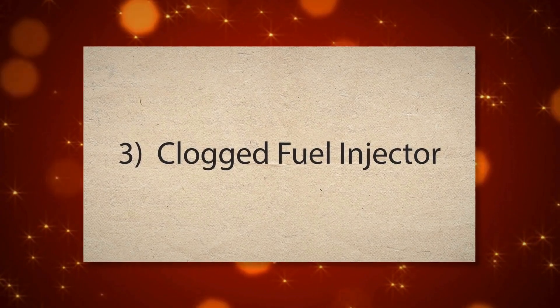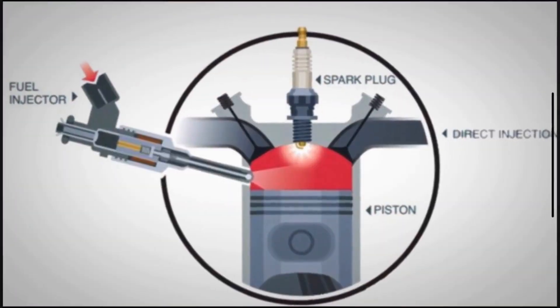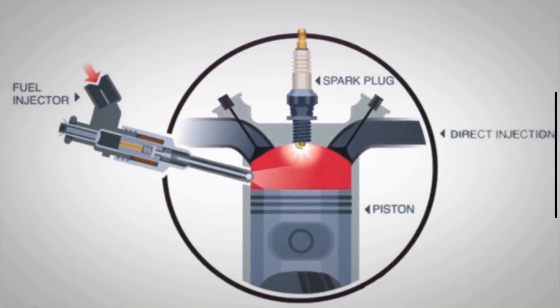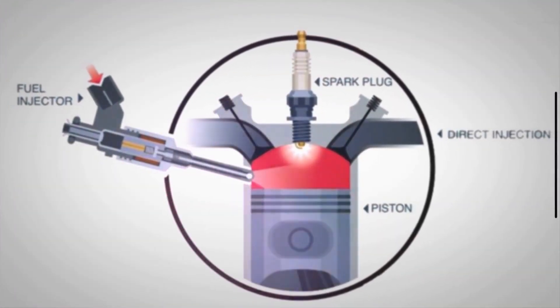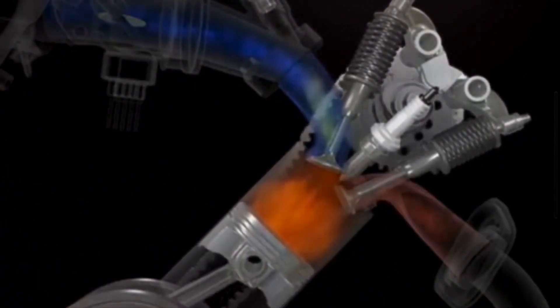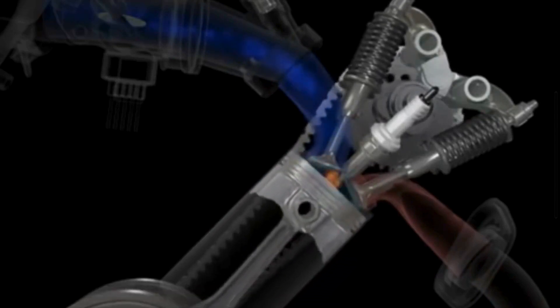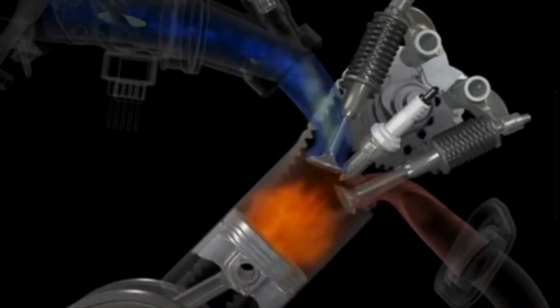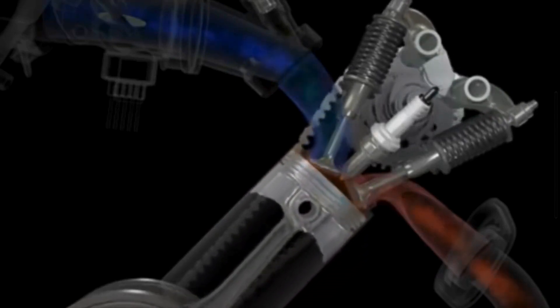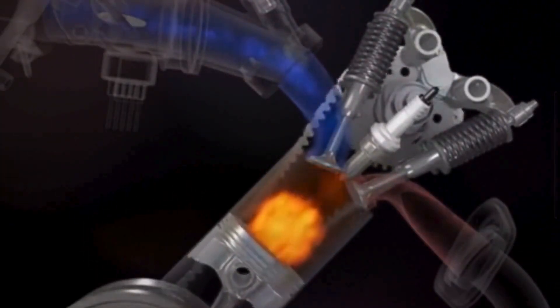The third cause is a clogged fuel injector. Fuel injectors deliver fuel into the engine's combustion chambers. If a fuel injector becomes clogged or fails, it can't deliver the correct amount of fuel. A clogged or faulty fuel injector for Cylinder 2 can lead to an incorrect air-fuel mixture, resulting in poor combustion and a misfire.